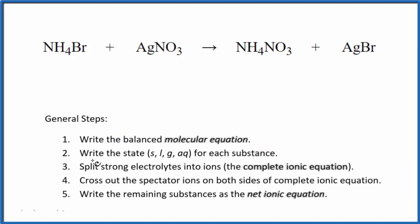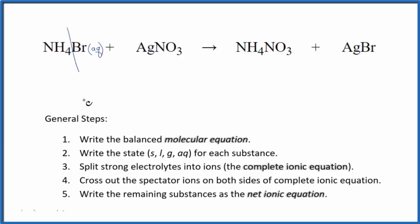Next, we write the state for each substance. If you know your solubility rules, ammonium compounds are very soluble — 'aq' means it's going to dissociate into its ions and dissolve in water. Nitrates are also very soluble. And ammonium nitrate will also be soluble.